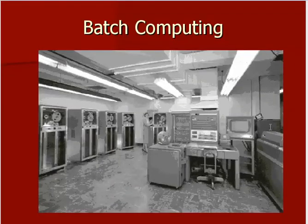Most of these mainframes, at least early on, were operated under a system known as batch computing. You had one person in your office who mostly dealt with the mainframe. The mainframe tended to be located in a separated, isolated room — it had to be very climate-controlled because the mainframes produced a great deal of heat and had very specific energy requirements. There had to be a room set up especially for it, with special floors to support the weight and fire protection.